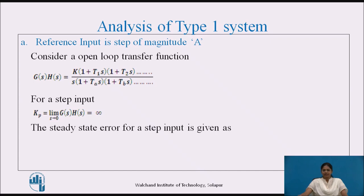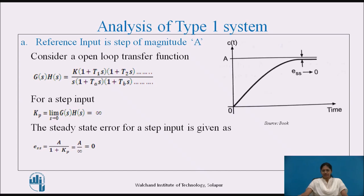The steady state error for step input is given as E(S) equal to A/(1 + Kp). After substituting Kp equal to infinity, we get the steady state error equal to 0. In general, for any type of system greater than 0, Kp will be infinite and error will be 0. Though mathematically the answer is 0, practically some small error will be present, but it will be negligibly small. This is shown in the figure, showing negligibly small error.